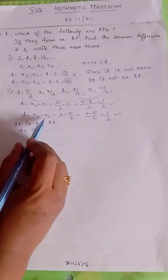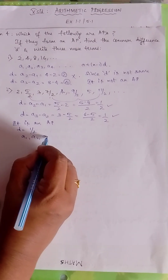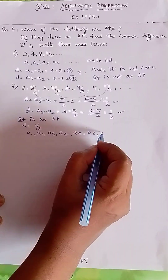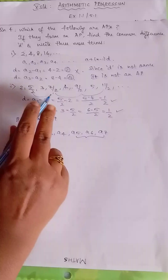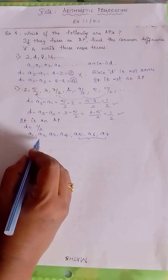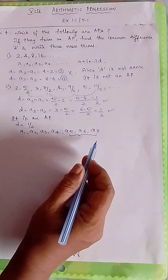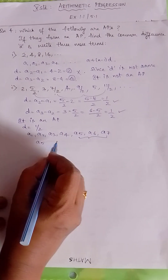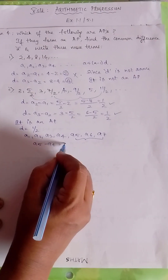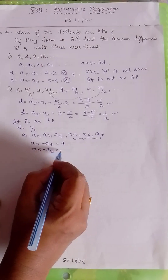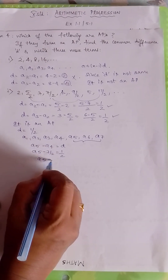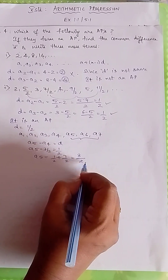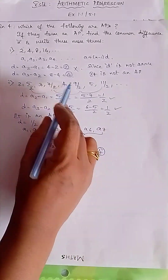We have to write the 3 more terms. A1, A2, A3, A4 are already in the question. We need to find A5, A6, A7. To find A5: A5 minus A4 = D, so A5 minus 7/2 = 1/2. Therefore A5 = 1/2 plus 7/2 = 8/2 = 4.